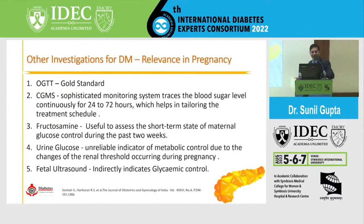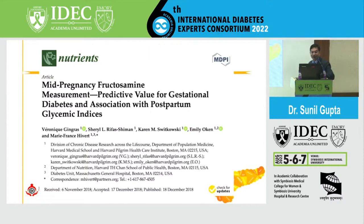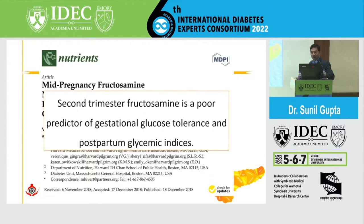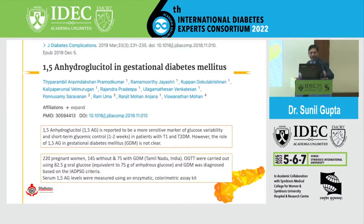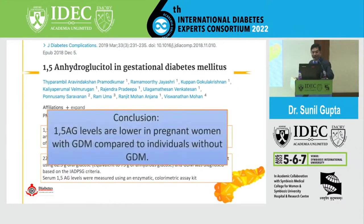Other investigations relevant for diabetes in pregnancy: OGTT is the gold standard. CGM may be used. Fructosamine gives a reading of only around 2 weeks and urine glucose has no value. Mid-pregnancy fructosamine measurement has been shown to be a poor predictor of glucose intolerance in pregnancy as well as postpartum. Another marker is 1,5-anhydroglucitol in gestational diabetes, which may account for variables like iron deficiency anemia or fetal hemoglobin that affect HbA1c. 1,5-AG levels are lower in pregnant women with GDM compared to those without GDM, similar to HbA1c.